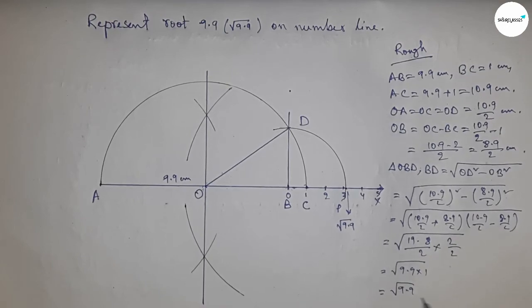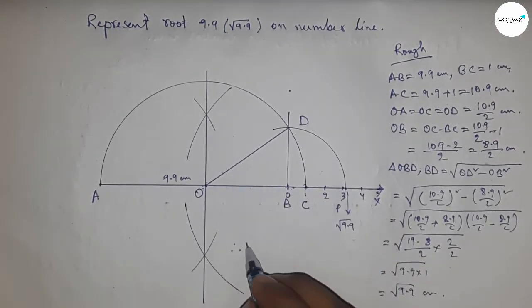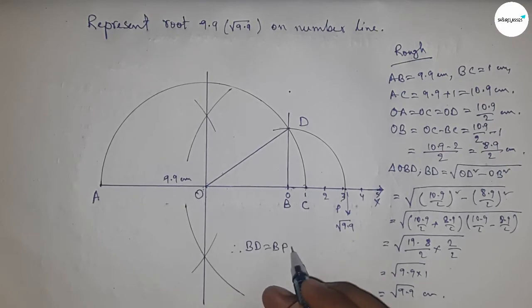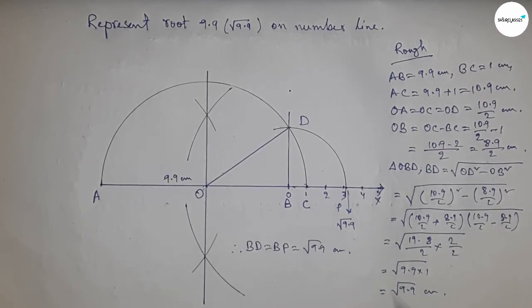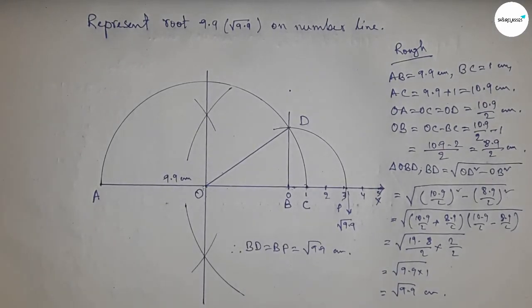Therefore distance BD and BP are equal, so this is root 9.9 centimeter. That's all, thanks for watching. Please subscribe, like and comment on my video.